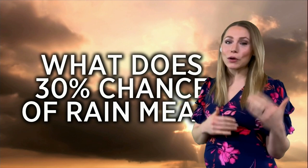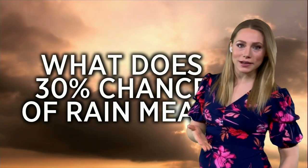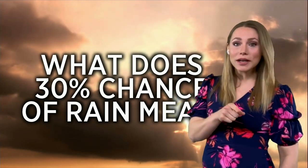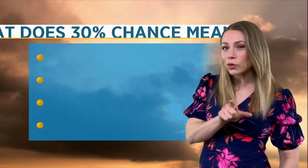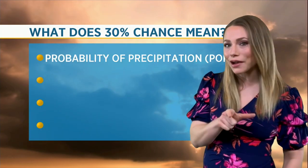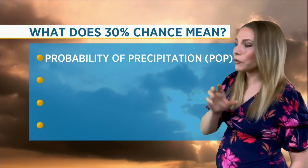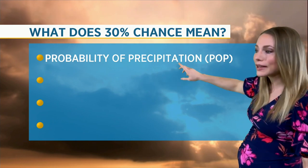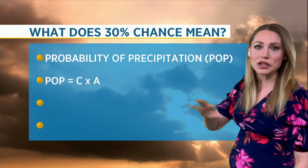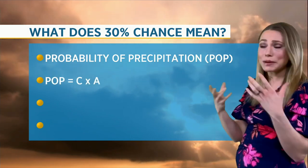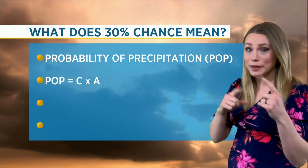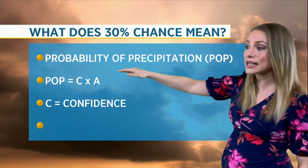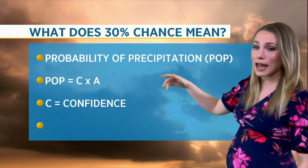So I thought we'd go through it. What does a 30% chance of rain mean? Well, the woman in that video is right, sort of — she's got half of it. We have to go into what this actually means. It's the probability of precipitation. You see this on a lot of forecasts. It's actually a math equation. POP — that probability of precipitation — equals C times A.